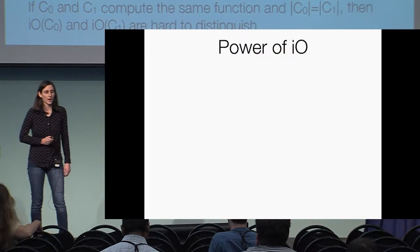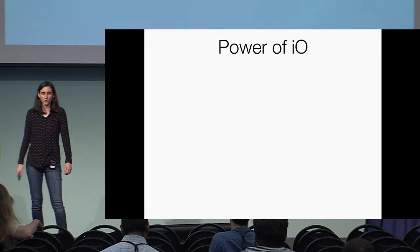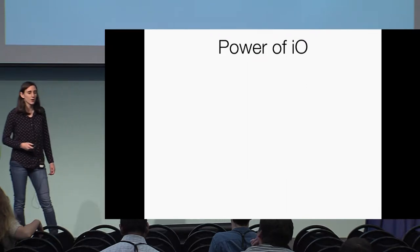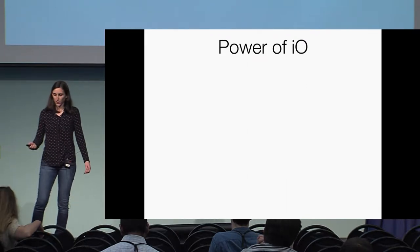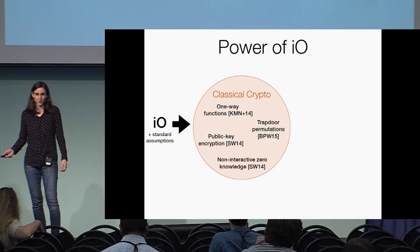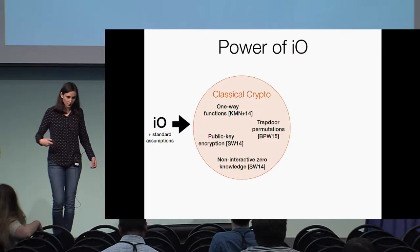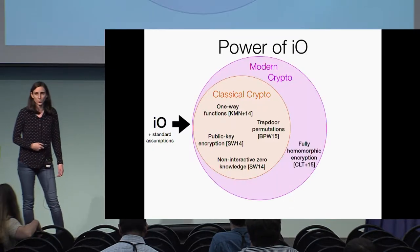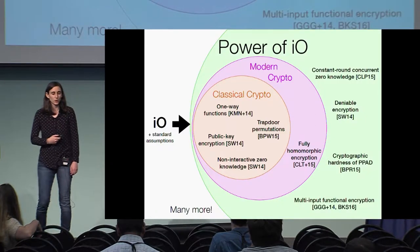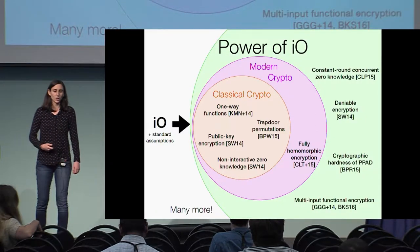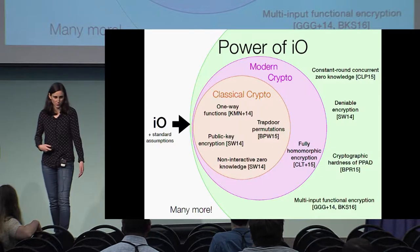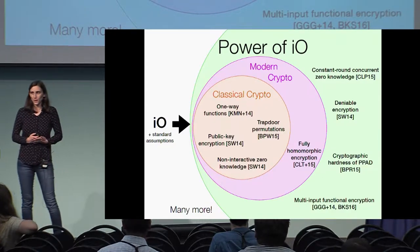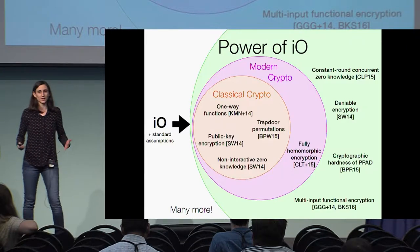The main reason why IO has become such an exciting area of research is its power. There's a large body of work showing that IO implies nearly all concepts in cryptography, ranging from those in classical crypto like one-way functions and public key encryption, to more modern concepts like fully homomorphic encryption, and even to those beyond the reach of any other assumption, like deniable encryption or multi-input functional encryption. Because of this, the main question we should be asking is: how do we construct it?